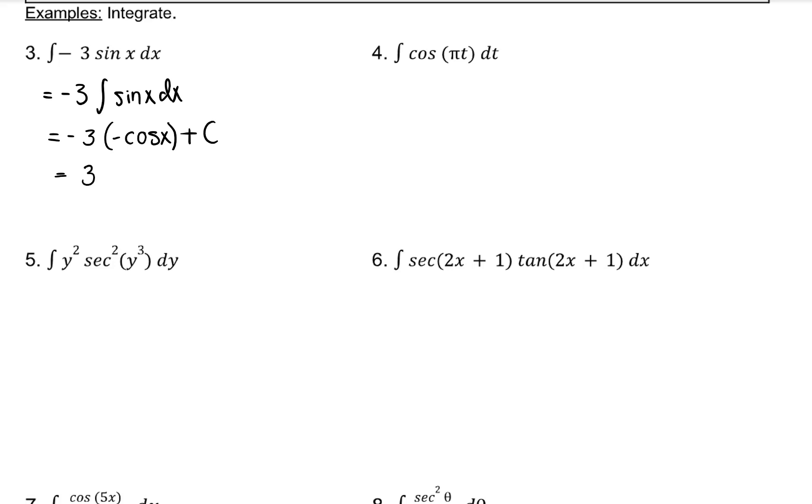You could have also just taken out 3 and left the negative inside and then antiderived from there. Here we have cosine of u, so we have to make sure u prime is in the integrand. Multiply by pi and 1 over pi. Now the integral of cosine u, u prime.